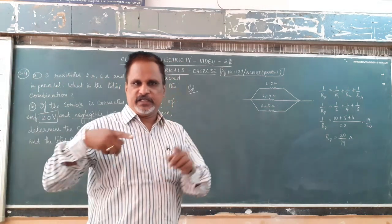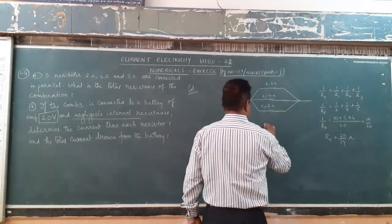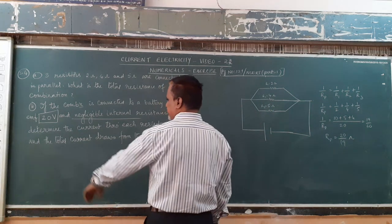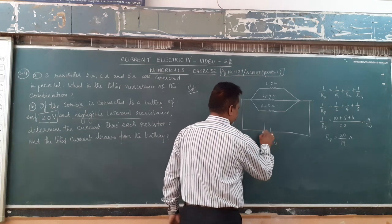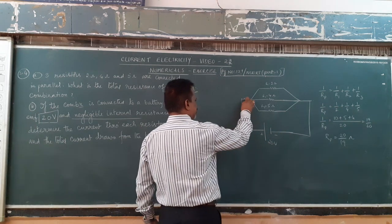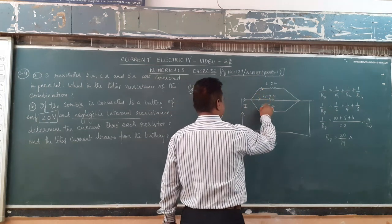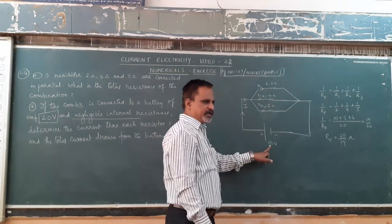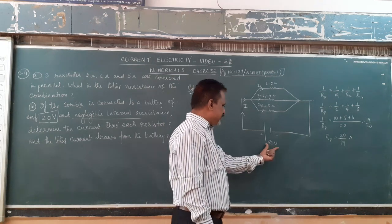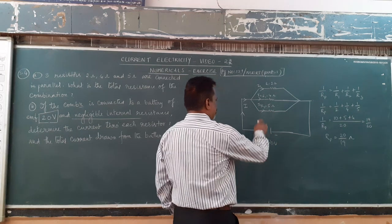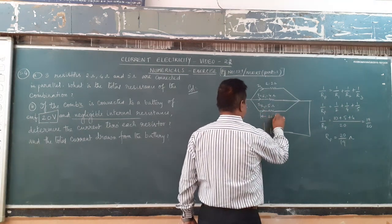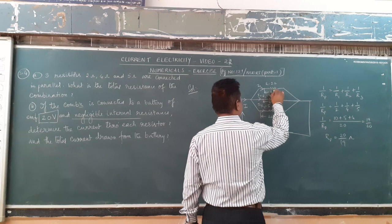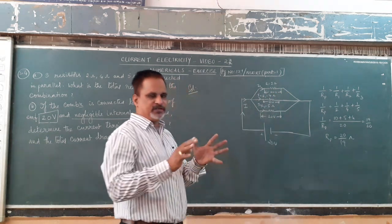Here we have to find the current through each resistor. There is a battery connected across the combination. The EMF of the battery is 20 volt. The battery sends a total current I, which gets divided into three branches as I1, I2, and I3. Since the battery has no internal resistance, the potential difference across each branch is the same — 20 volt across each resistor, since they are in parallel.